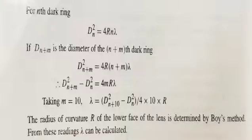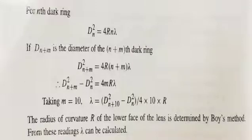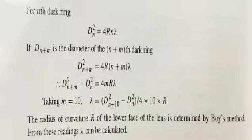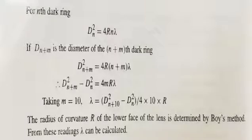For the dark ring, the diameter squared equation gives d_n² = 4nRλ. For the (n+m)th ring, d_(n+m)² = 4R(n+m)λ. Taking the difference: d²_(n+m) − d_n² = 4mRλ, where m = 10. Using this equation and the known radius of curvature R, we can easily find lambda — the wavelength of the monochromatic light used in this experiment.